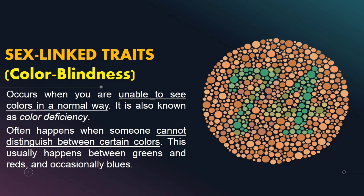So define natin what is color blindness. It occurs when you are unable to see colors in a normal way. It is also known as color deficiency. Mga taong may color blindness, hindi ibig sabihin bulag sila sa kulay. Someone cannot distinguish between certain colors — specifically between green and red color, and occasionally blue color. So madalas sa green and red color.